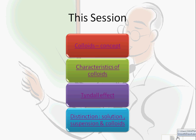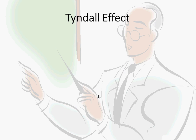The sixth characteristic is that colloids scatter a beam of light passing through them. Most of these characteristics are similar to what we have already discussed for suspension and solution, but the scattering of light is unique to colloids. Let's look at an experiment to understand what this scattering of light through a colloidal solution actually means.